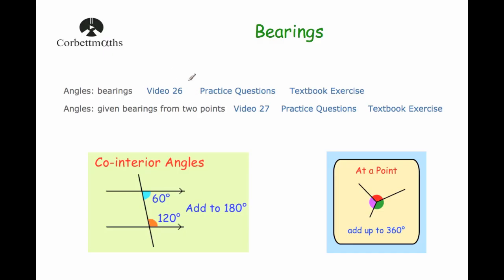If you watch video 26 on corporatemavs.com, you'll get a good outline of what bearings are. There are also two other bits of knowledge you'll need to calculate back bearings. First, co-interior angles: if you've got two parallel lines — perhaps the two north lines — the angles within those add up to 180 degrees. And if you've got angles that meet at a point, they add up to 360 degrees.